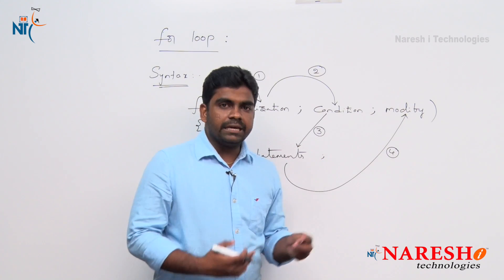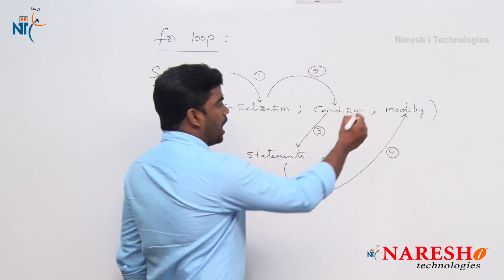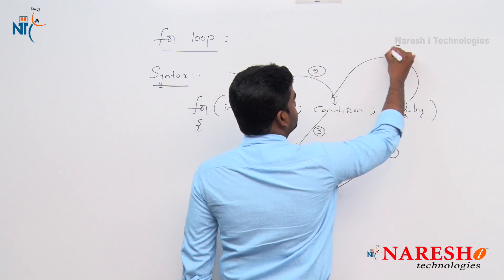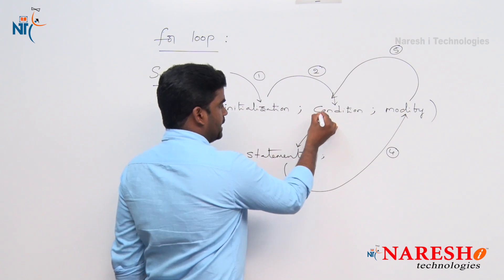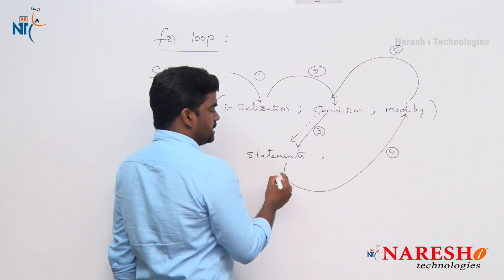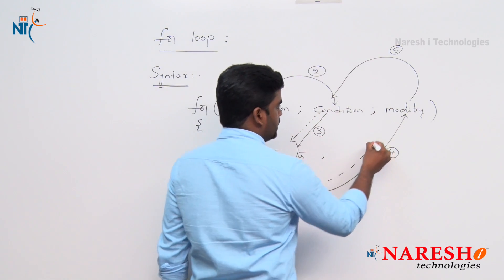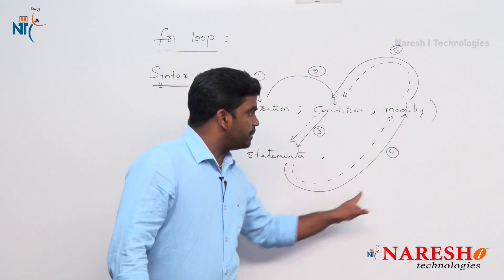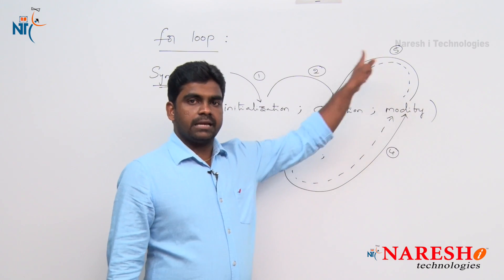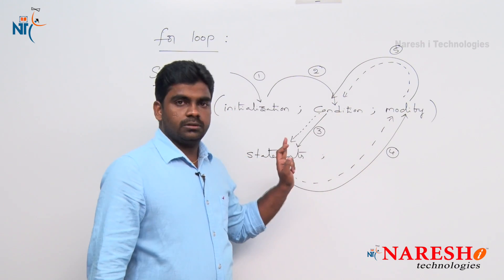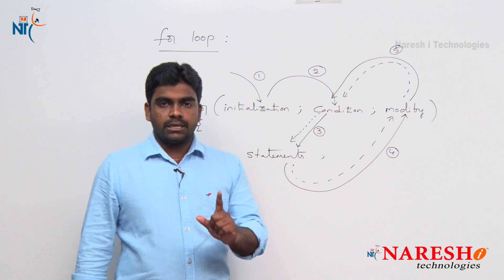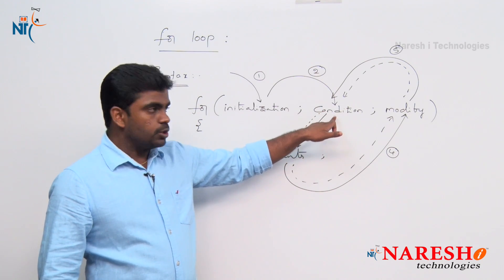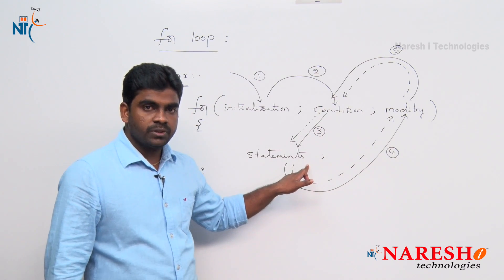Modify means increment and decrement statements. After modify, once again it will check the condition. If condition is true again, then the control moves inside, statements execute, then it will go and execute modify, and then check the condition again. The loop will repeat here only. As long as the condition is true, it will execute. The initialization statement executes only once.